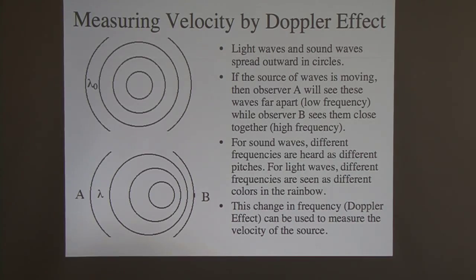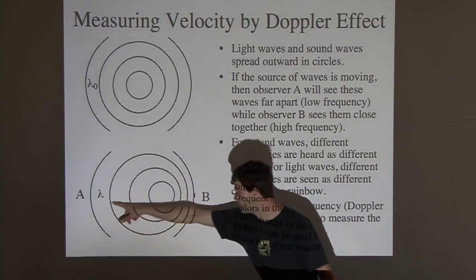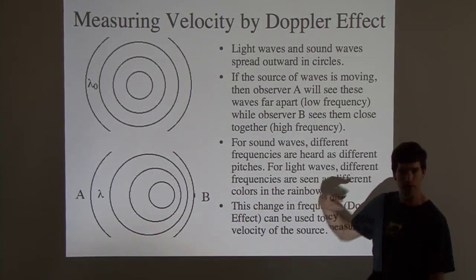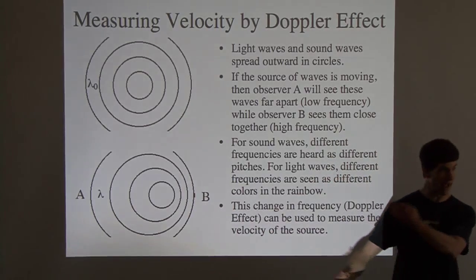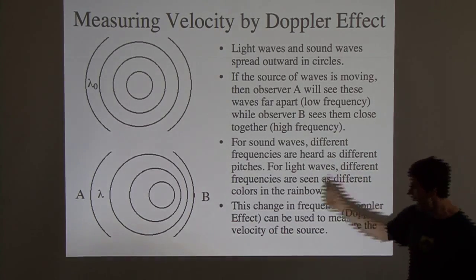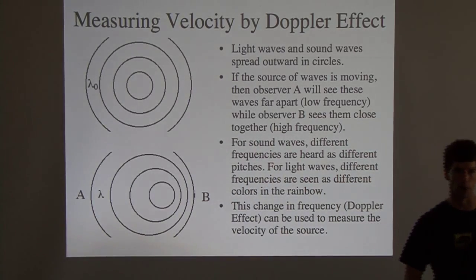If instead that source of waves starts moving, so down here I've drawn a source of waves which is moving to the right here, then what you get is a Doppler shift. In front of that source of waves, the waves are going to be extra close together. That means you're going to pass with a higher frequency. Behind that source of waves, you get a longer wavelength. They're passing with a lower frequency.